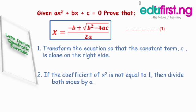Rule two says: if the coefficient of x squared is not one, then divide both sides by a. The coefficient of x squared must be one, but here it is a, so we need to eliminate a by dividing all through by a. Once that is done, a cancels and we are left with equation three.